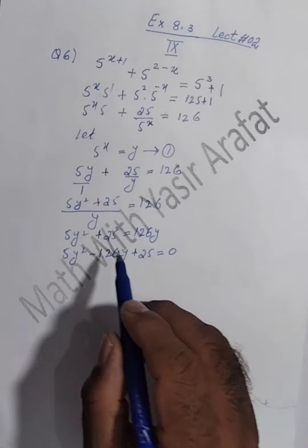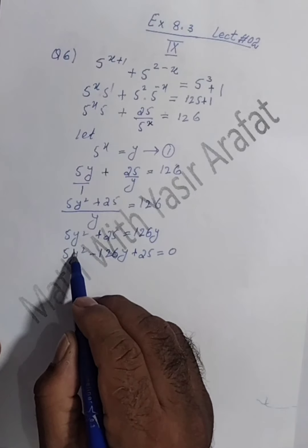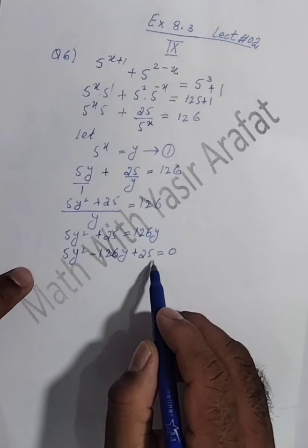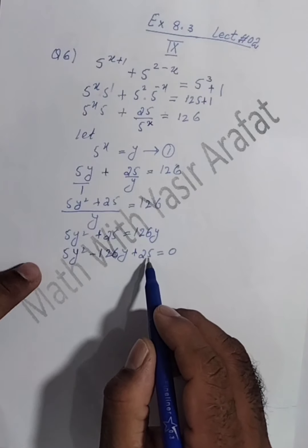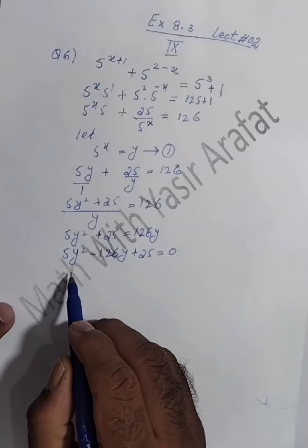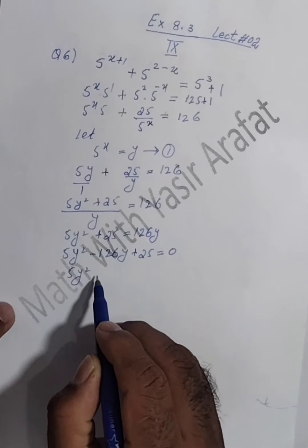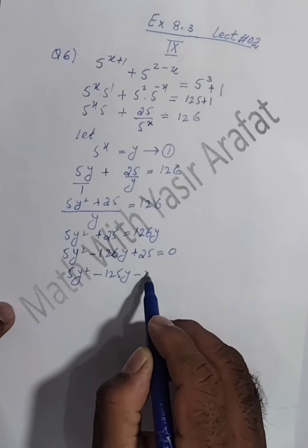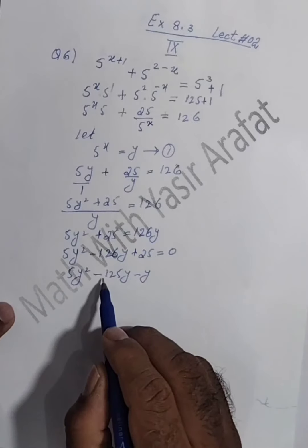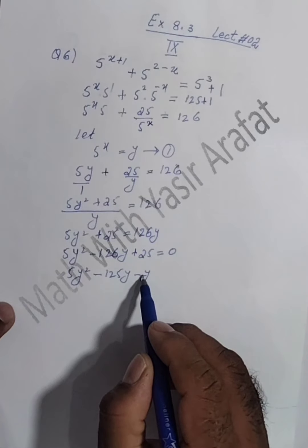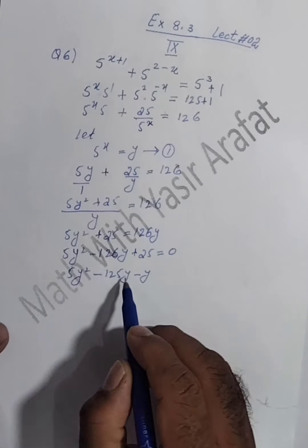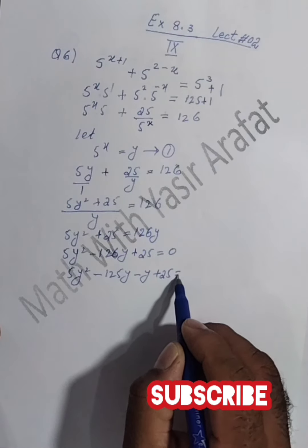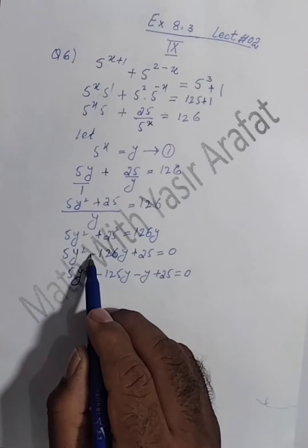Writing in standard form: 5y² - 126y + 25 = 0. It is now a quadratic equation. We can apply the quadratic formula or we can use the middle term breaking method. For middle term breaking: 5 multiplied by 25 gives 125, and we need two numbers whose product is 125 and sum is -126, which are -125 and -1.